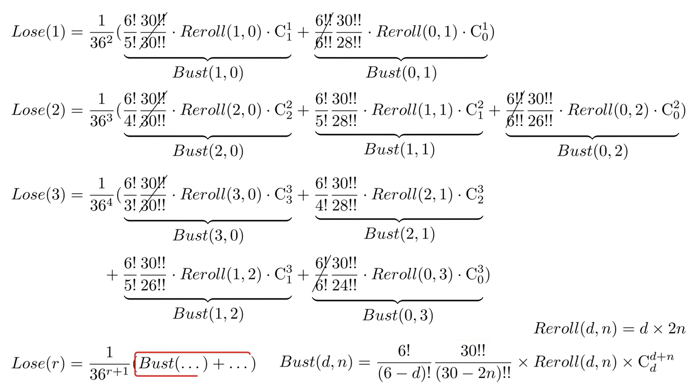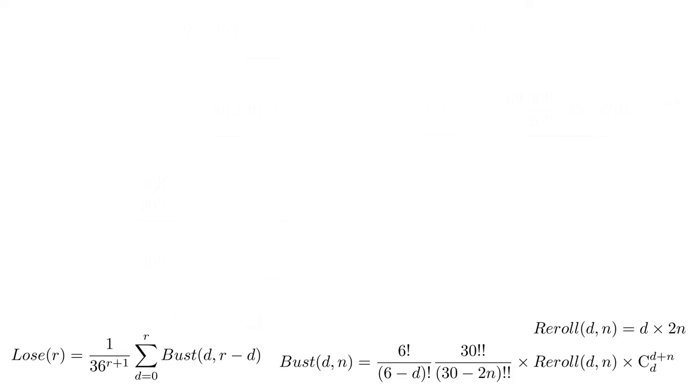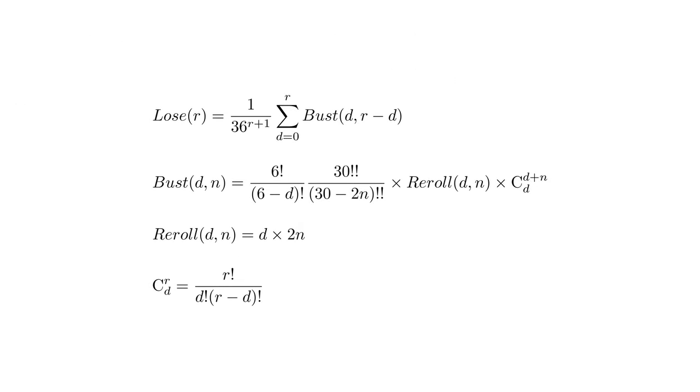The last thing we need to do is codify how many bust terms we are adding up, and what parameters to pass in. Notice that the d parameter starts at the number of rolls, and goes down to 0. We can use the summation notation to indicate that, using d as the summation index. I'm going to add a little question mark above the equal sign, because at this point, we have no proof or verification that this is correct. We will deal with that in a bit.